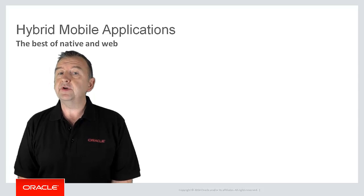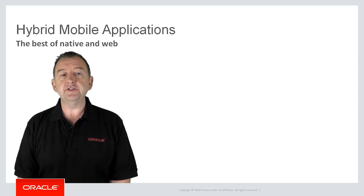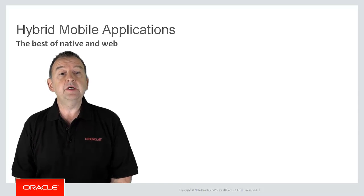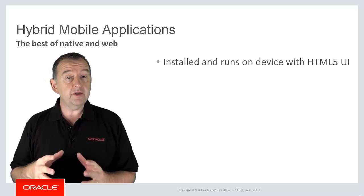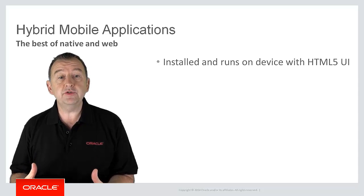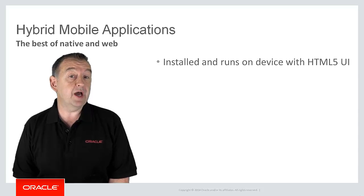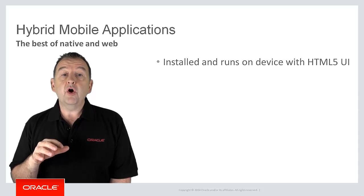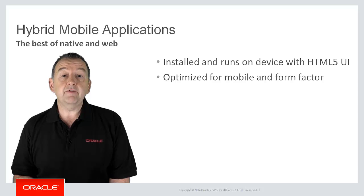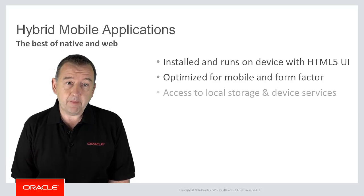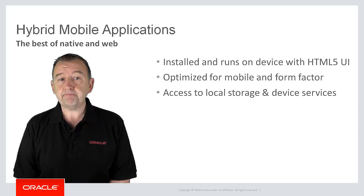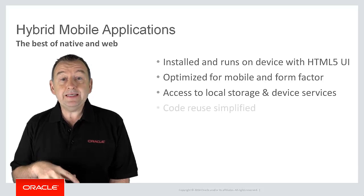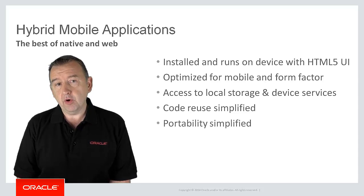In an earlier episode I introduced the different options for mobile applications. I touched on web applications and native applications, but my focus today is on hybrid. These are applications which are installed and run as native applications but extensively use standardized web technologies like HTML5, CSS3, and JavaScript to provide much of the application's functionality. Because they run on the device they can be optimized for the platform and can more easily call out to device features such as camera, GPS, and even local storage. And because we use a common language of HTML5 within a hybrid, the code can be easily reused or ported between different operating systems.